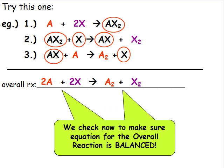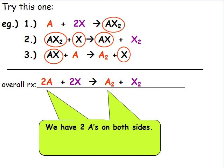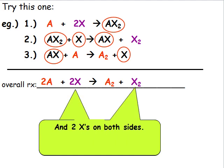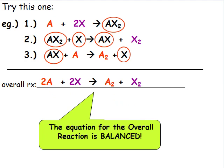We check now to make sure the equation for the overall reaction is balanced. We have 2 A's on both sides and 2 X's on both sides. So the overall reaction is written and balanced.